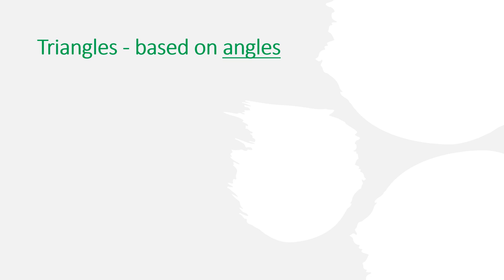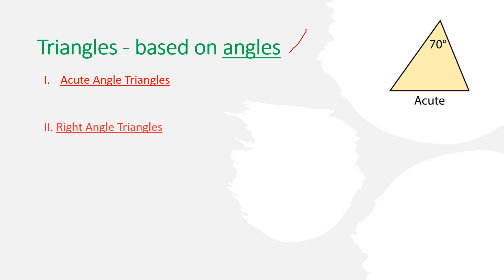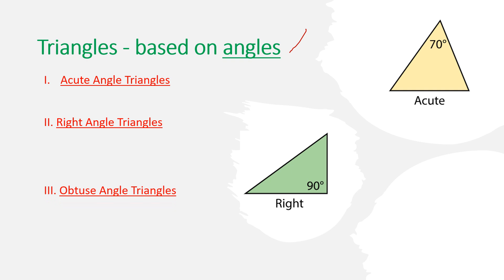A triangle is a closed shape — a three-sided closed shape. We can classify triangles based on angles or based on sides. Based on angles, we can classify triangles into three types: acute angle triangle, right angle triangle, and obtuse angle triangle. Some people call them acute triangles, right triangles, and obtuse triangles — both are acceptable.